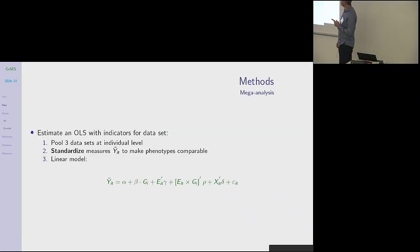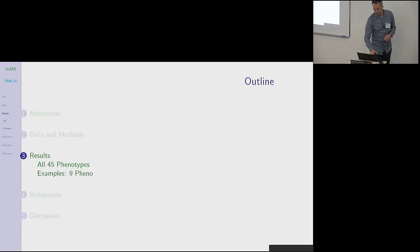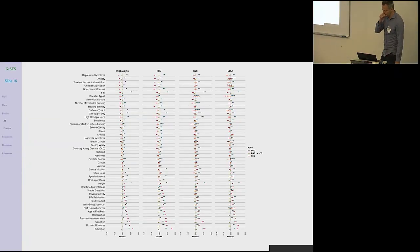Then last, we do a meta-analysis. So the same regression, basically linear regression. We pool the three data sets at the individual level. We standardize the measures to make the phenotypes more comparable across the data sets. Okay, so I'm going to show the results, the main results for 45 phenotypes first. Since that's a lot to digest, I'll also focus on nine specific examples.